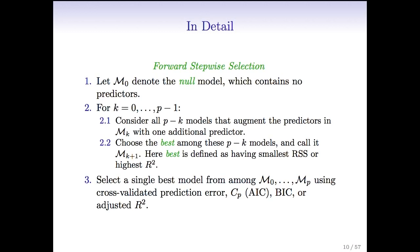We start with the null model M0, which just contains an intercept — you predict the mean for every observation. Then we create M1 by taking M0 and finding the best predictor to add that leads to the smallest RSS or largest R squared. To get M2, we take M1 and consider adding all P minus 1 possible predictors, choosing whichever gives the best model M2. For M3, we look at M2, consider all P minus 2 remaining predictors, choose the best one, and so on.